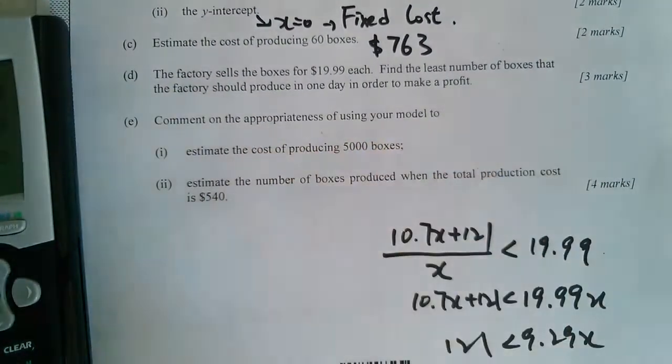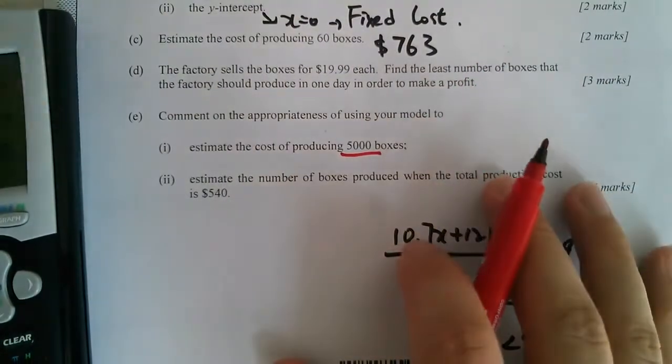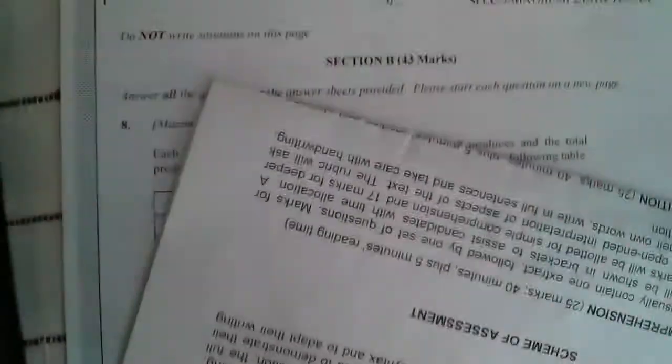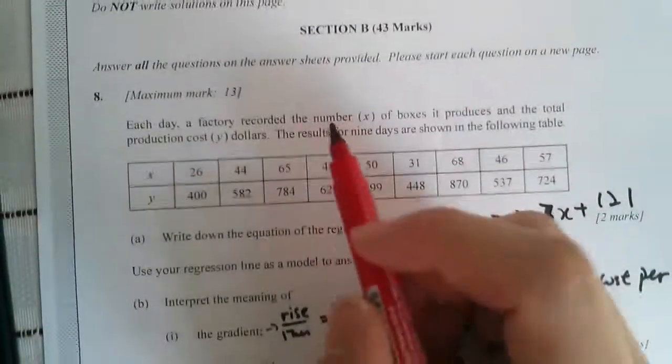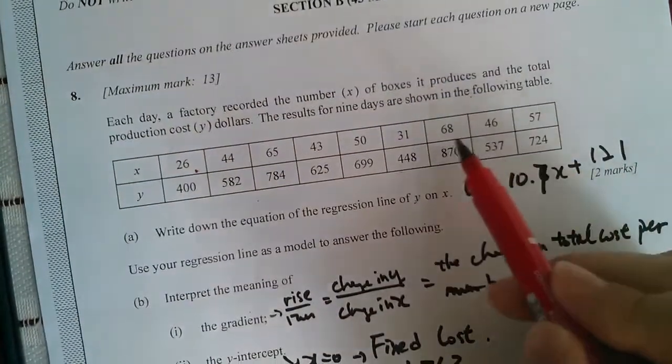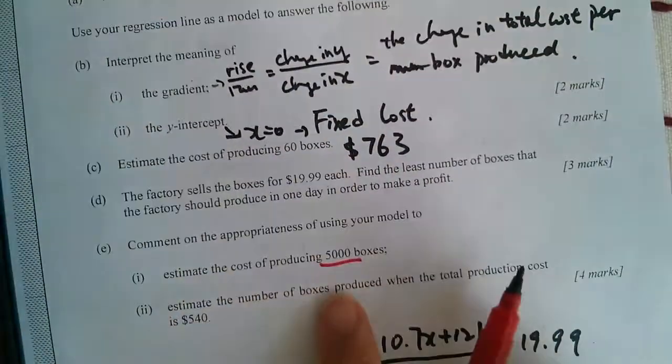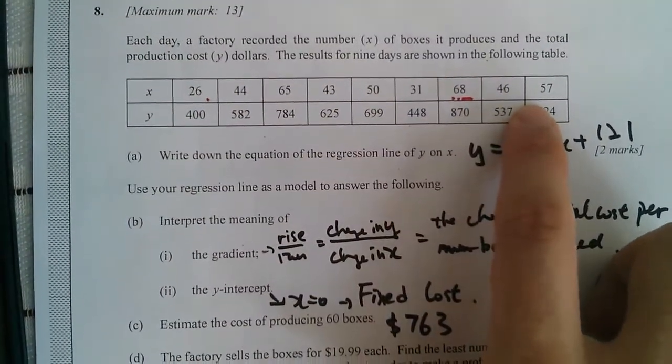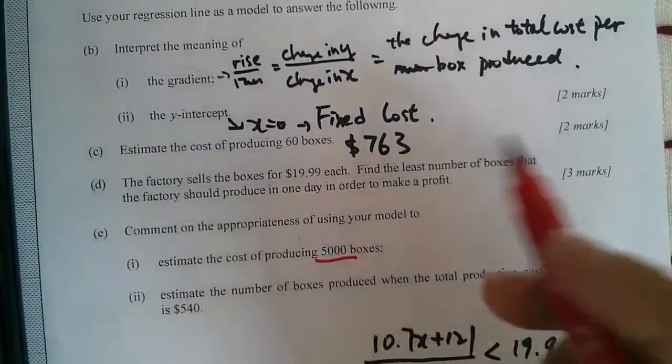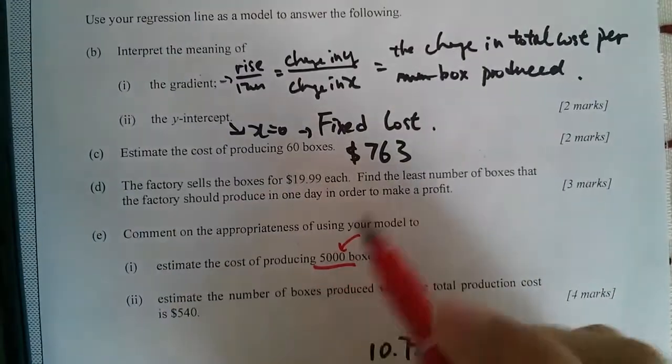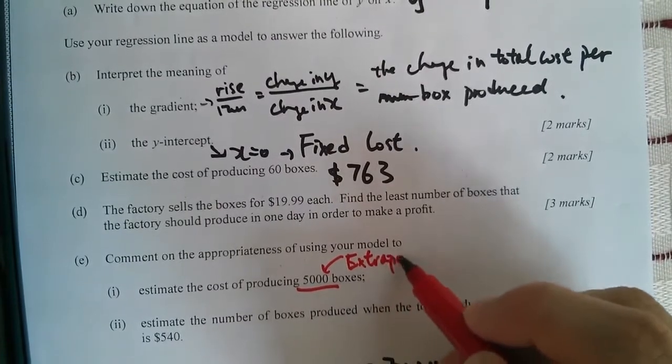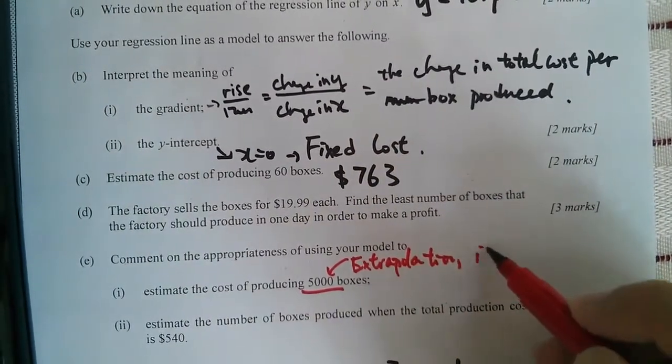The last part: comment on the appropriateness to use your model to estimate the cost for 5000 boxes. Look at the range of the boxes we have here. The number of boxes we have is like 26 to at most 68. 5000 boxes is way outside of this range, therefore it's no longer appropriate because maybe for the factory after this range the situation would have changed and the cost would really be different. So whenever the number you want to predict is totally outside your range, we call this extrapolation, and whenever it's extrapolation we would think it's quite inappropriate.